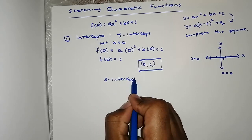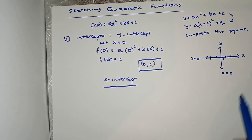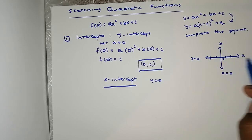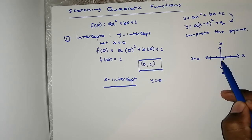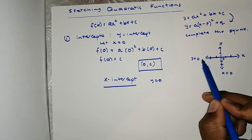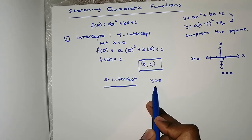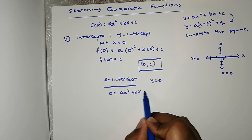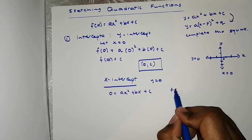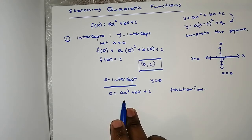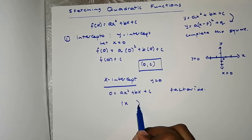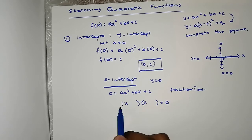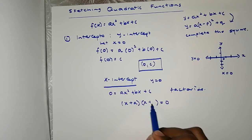Secondly, you look for your x-intercept — where your graph will touch or cut the x-axis. The equation of the x-axis is y equals zero, so you let y equal to zero, giving you 0 = ax² + bx + c. From here you factorize the equation into a form whereby you can find the values of x, for example (x + a)(x + b) = 0.